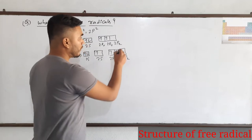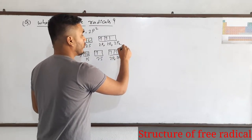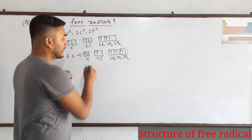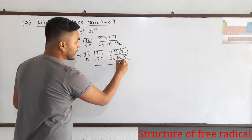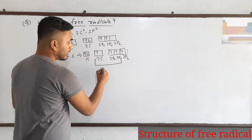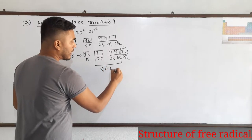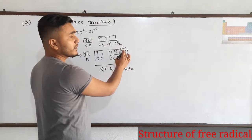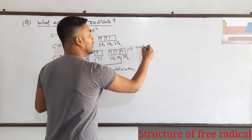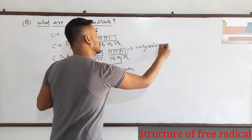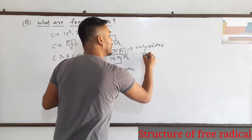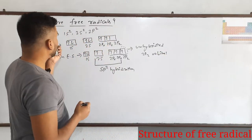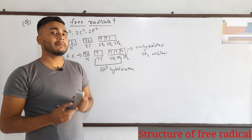In a free radical, one of the electrons is not shared — that is the odd electron. This odd electron will not take part in any chemical reaction. The number of unpaired electrons participating is 3, so it forms sp2 hybridization, and this one odd electron remains in the unhybridized 2pz orbital. So the hybridization of carbon-based free radical is sp2.